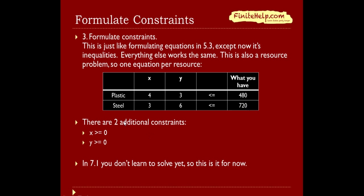In addition, there are two implicit constraints: x has to be greater than or equal to 0, and y has to be greater than or equal to 0. That's just saying you cannot make a negative number of cars or trucks. You don't need to learn how to solve this for now — this is as far as we go.